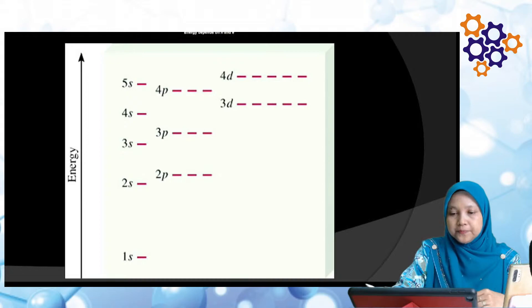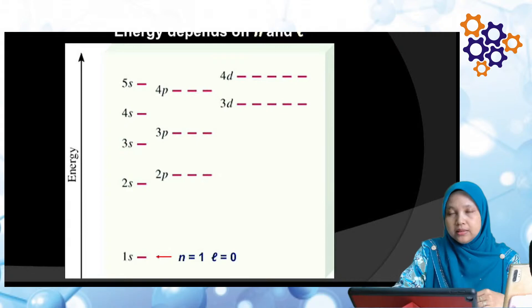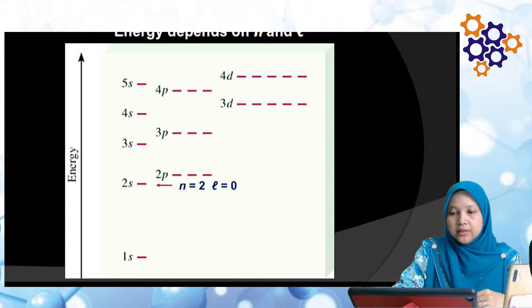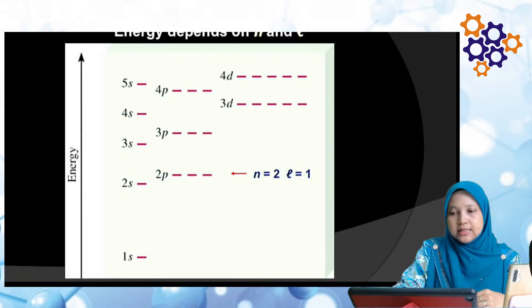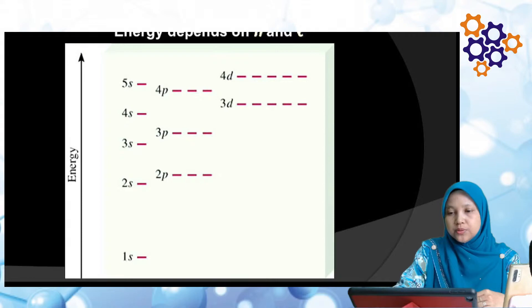Energy depends on N and L. Yang bawah sekali, N=1, L=0 adalah 1S. Naik atas, N=2, L=0 untuk 2S. Atas sikit, kita ada 2P: N=2, L=1. Naik atas lagi untuk 3S: N=3, L=0. Lagi atas, N=3, L=1 untuk 3P, dan seterusnya.